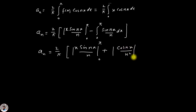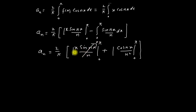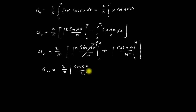After putting the upper and lower limits, the first term [x sin(nx)/n] becomes zero, and finally we get: aₙ = (2/π) × [cos(nx)/n²] from 0 to π.